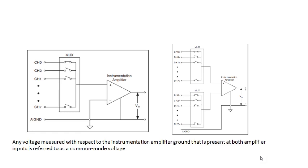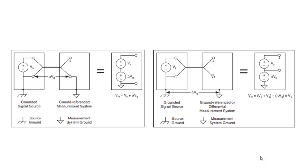The advantage of differential signal measurement is its high common mode rejection ratio. This is because signals common to both wires are cancelled out by the differential amplifier. In a single-ended system, since the measurement system and signal source grounds are not at the same potential, the difference in voltages is also measured, giving erroneous values and affecting accuracy.